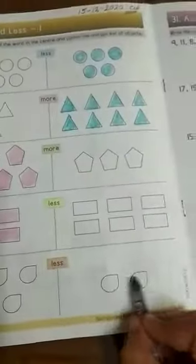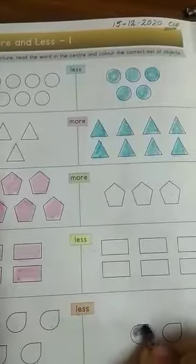1, 2, 3, 4, 5, 6. And 1, 2. Which one is less? Kaunse kam hai? This one. So, color these two. Okay.